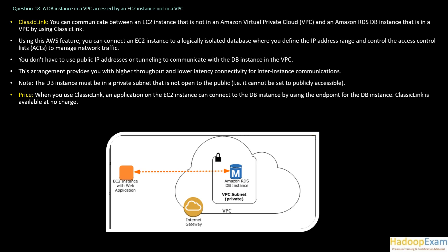Classic Link provides higher throughput and lower latency connectivity for inter-instance communication, because your RDS instance is on a kind of EC2 instance on which your database is installed. If you use VPN, you need to worry about throughput and other issues, but Classic Link does not create this kind of issue. So you should go for Classic Link.